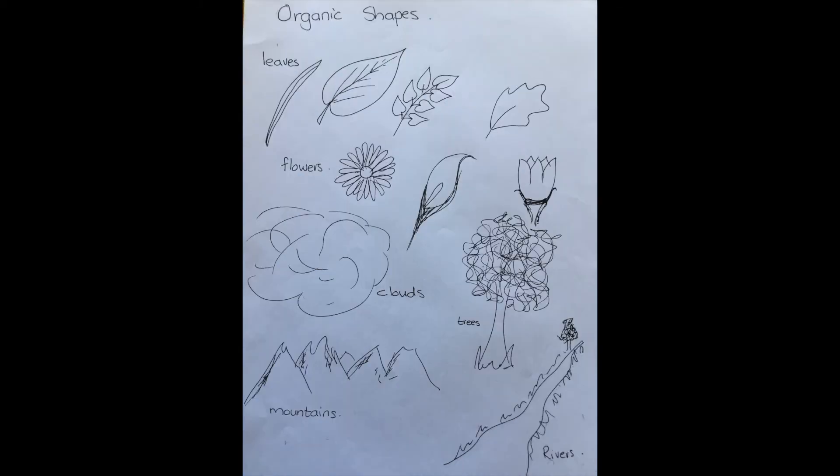We also get organic shapes, and these shapes have natural edges and have no specific names. They remind us of the natural world where shapes and objects are usually irregular. They're uneven and always changing, and most of them have curved shapes.